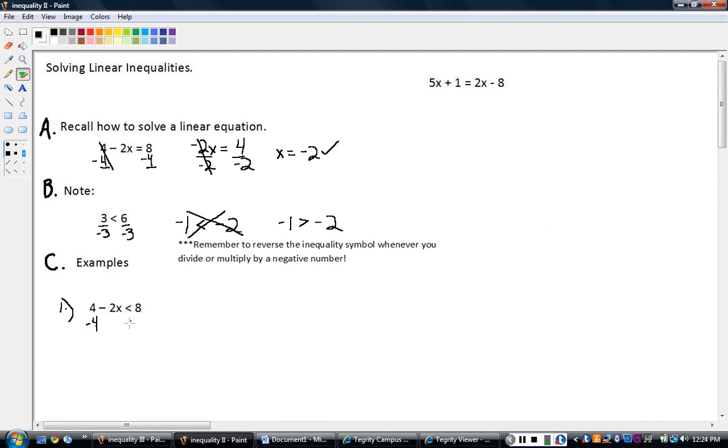Minus 4 from both sides. And everything looks the same. So I get negative 2x is less than 4. I divide by negative 2, which also is the same. But at this point, I've got to think to myself, hold on a second.